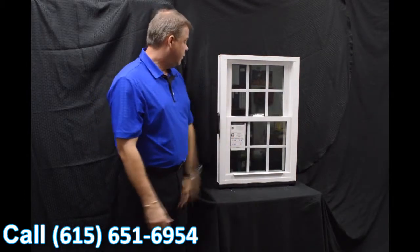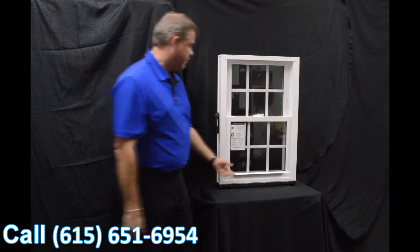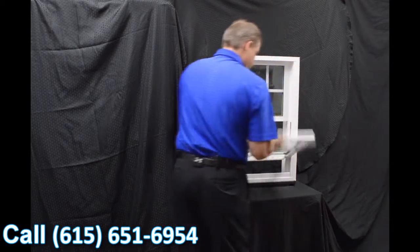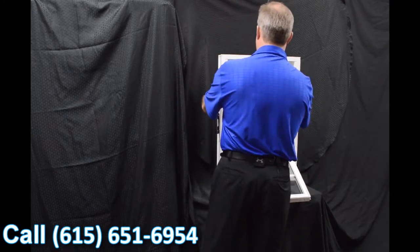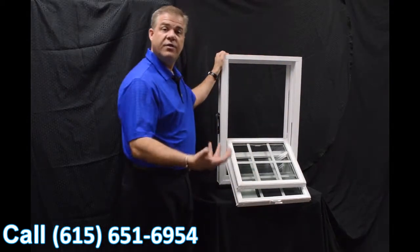One of the next features I wanted to talk about are the dual tilt latches which are featured on both the bottom and top sash. So to tilt the window in, you engage those tilt latches both top and bottom and you tilt the window in.